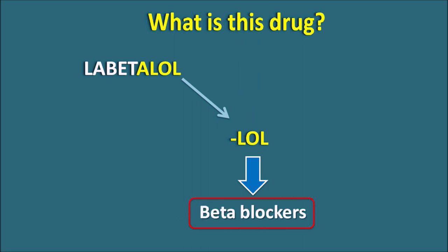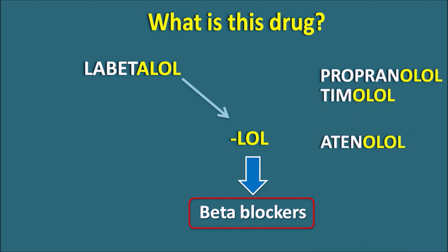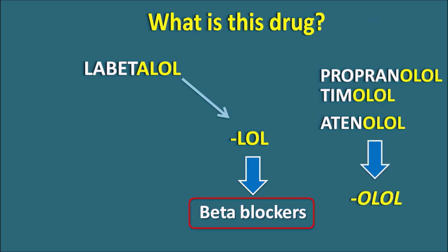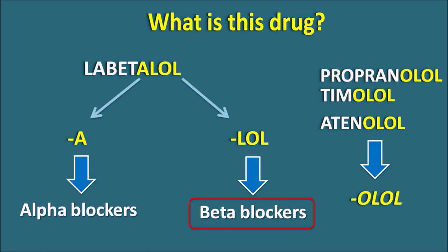We have many types of beta blockers like propranolol, timolol, atenolol — all having the similar suffix 'lol.' But if we carefully observe, most beta blockers have the suffix 'olol.' This suffix 'olol' is observed in most beta blockers except Labetalol and another drug, carvedilol. Labetalol has 'alol' instead of 'olol' because the 'a' indicates it is also an alpha blocker.